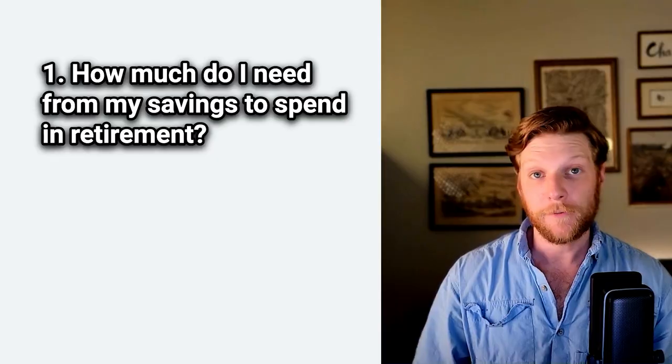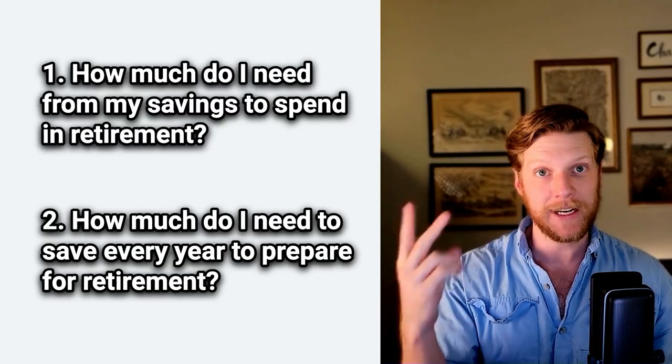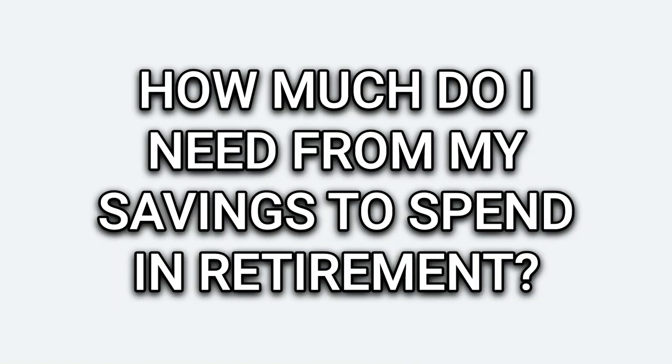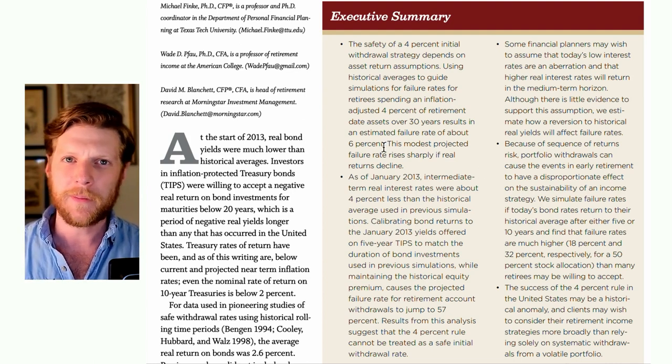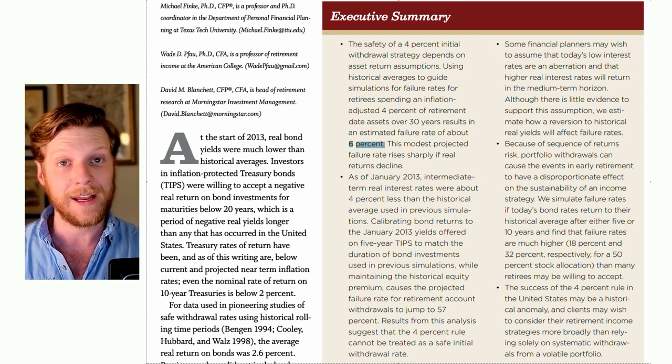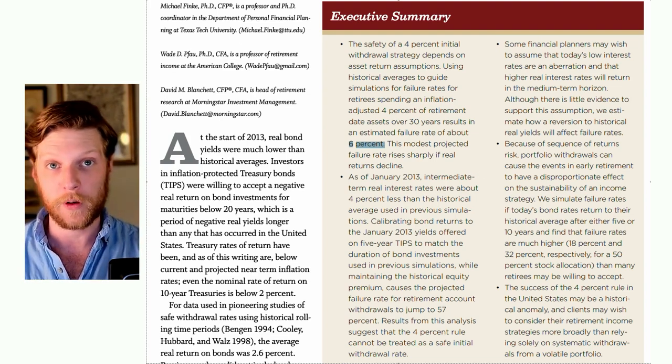Now that we know how much I need from savings every year, there are only two questions remaining. First, how much money do I need at 65? And second, how much do I need to save every year to reach that goal? Answering the first question is simple thanks to the 4% rule. The 4% rule states that you can safely withdraw 4% of your portfolio in the first year of retirement, then increase that amount each year to keep pace with inflation. Using historic returns, there is only about a 6% chance of running out of money before 30 years in retirement with a portfolio of roughly 60% stocks and 40% bonds.